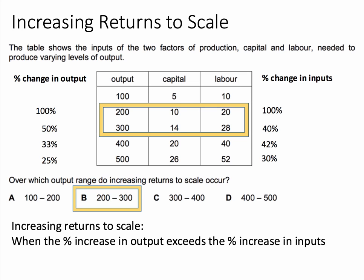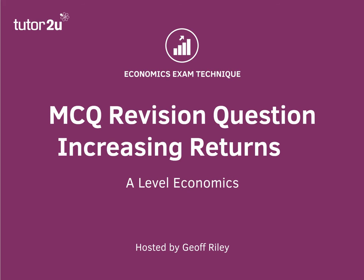To show the contrast: when we go from 14 units of capital to 20, and from 28 units of labour to 40, that's a 42% increase in inputs, but we only get a 33% change in output. That's decreasing returns to scale — you've probably come across that — also called a diseconomy of scale. So the answer to this question is B.